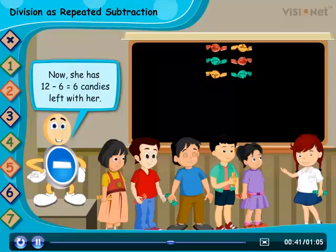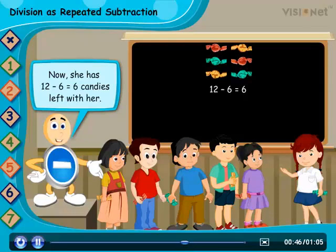Now she has 12 minus 6 is equal to 6 candies left with her.